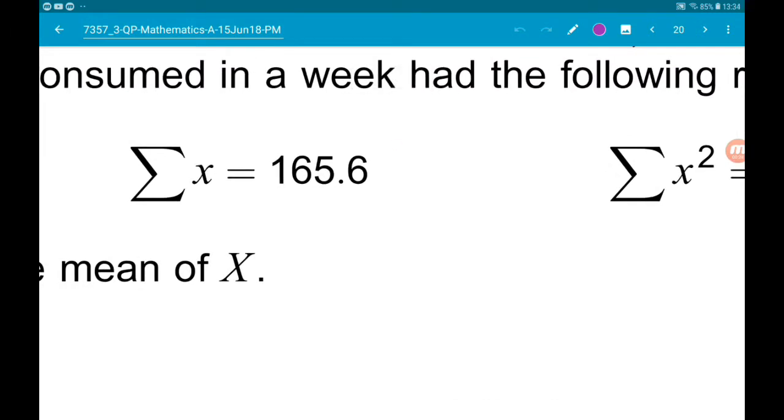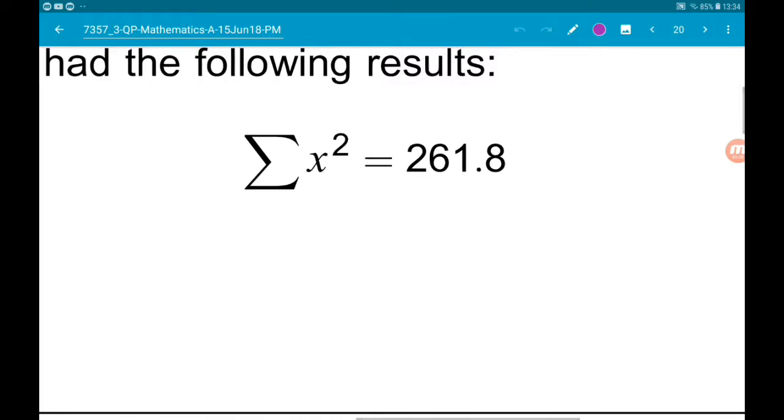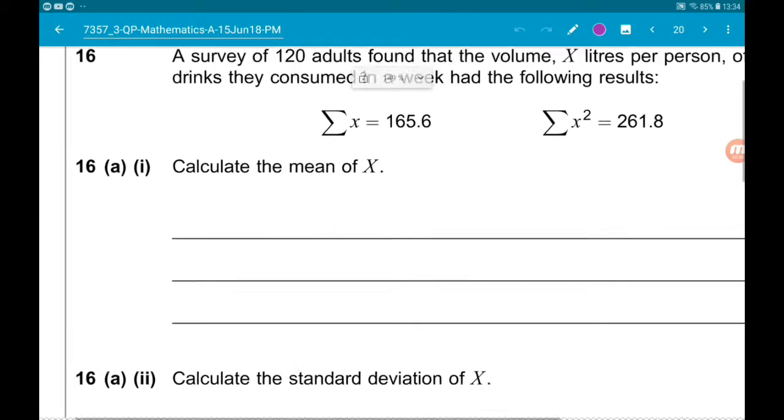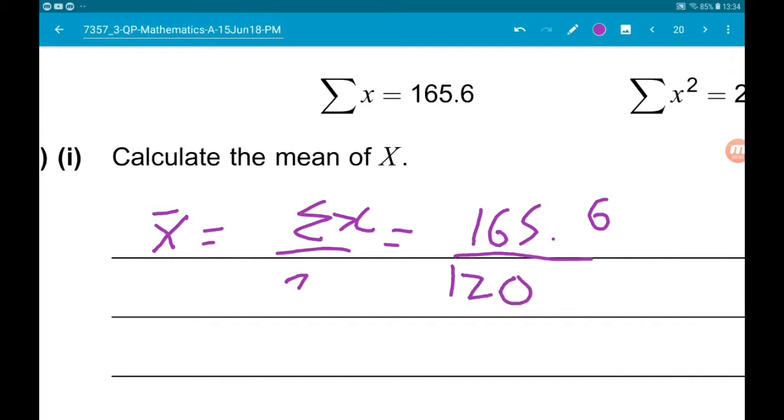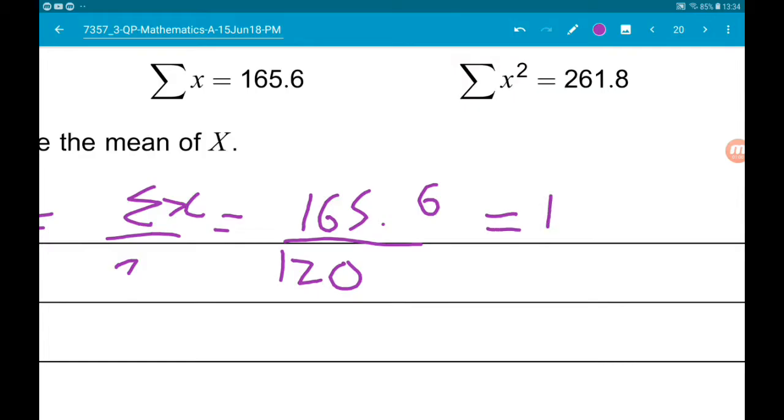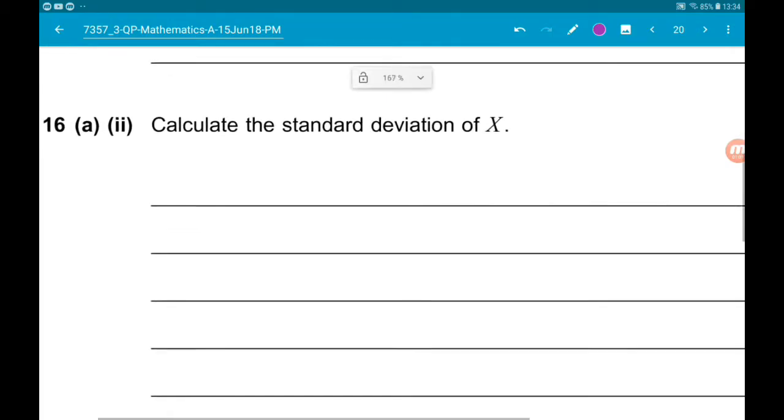Part one wants us to calculate the mean of X. So the mean is sigma X over n, which is 165.6 over 120, which gives us 1.38.